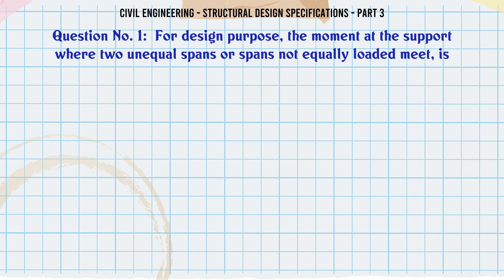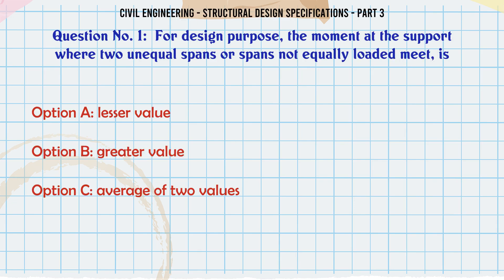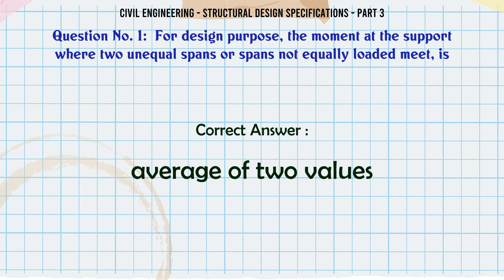For design purposes, the moment at the support where two unequal spans or spans not equally loaded meet is: a. Lesser value, b. Greater value, c. Average of two values, d. None of these. The correct answer is: average of two values.